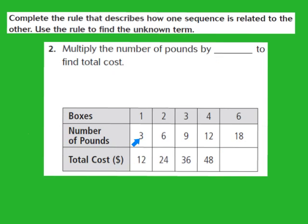Looking at the first pair: 3 pounds and a total cost of $12. I know that 3 times 4 gives me 12. So I'm going to try this rule out and see if it works for all the numbers in my sequence. I'll write down times 4, because 3 times 4 gives me 12. Now I can't stop here — we need to try the other numbers. For 6 pounds, if I multiply 6 times 4, does it give me 24? Yes, 6 times 4 does give me 24, so our rule is working out so far.